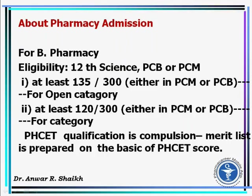Regarding Pharmacy admission for B-Pharmacy, the eligibility is 12 Science with Physics, Chemistry, and Biology, or Physics, Chemistry, and Mathematics. For Open Category, at least 135 marks out of 300 in either PCM or PCB. For Category Students, at least 120 marks out of 300 in either PCM or PCB. Pharmacy CET qualification is compulsory, as the merit list is prepared on the basis of the Pharmacy CET score.